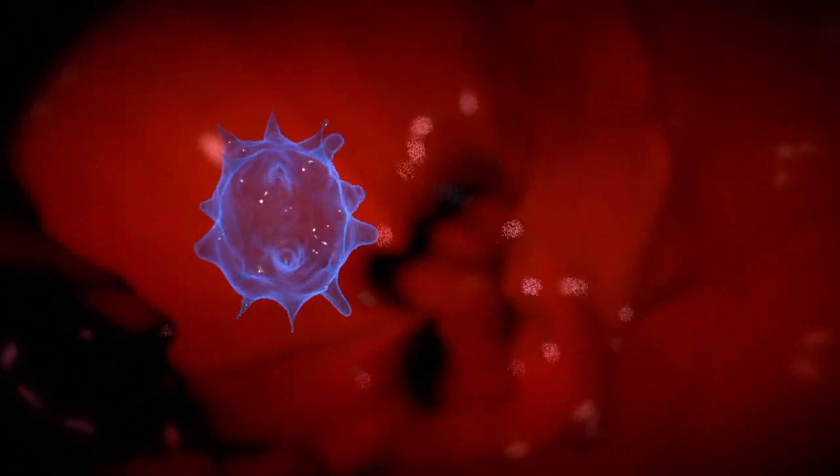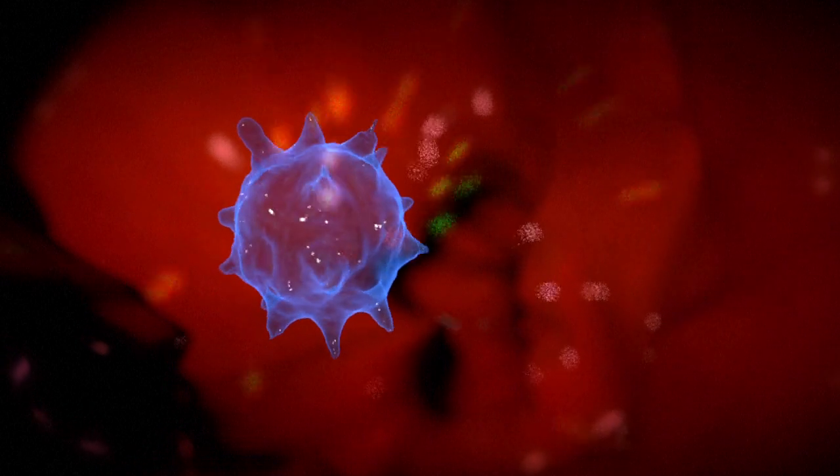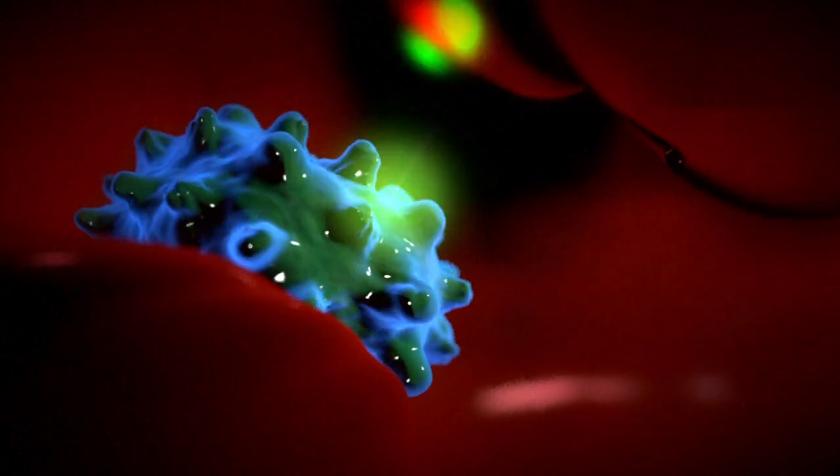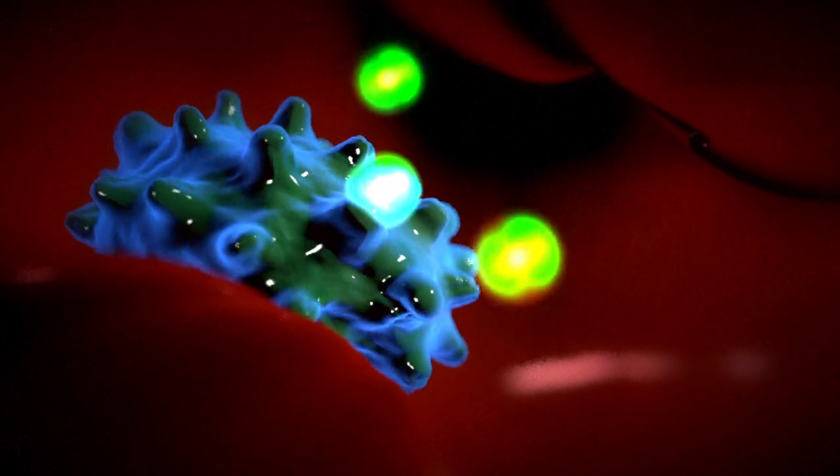B lymphocytes have the capacity to produce vast numbers of antibodies. Circulating around the body, antibodies latch onto these antigens and neutralize them, allowing macrophages to eliminate them.